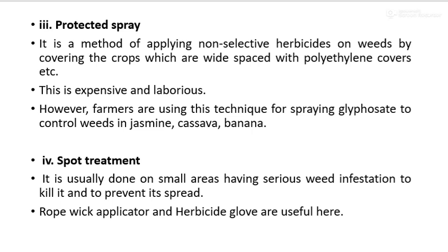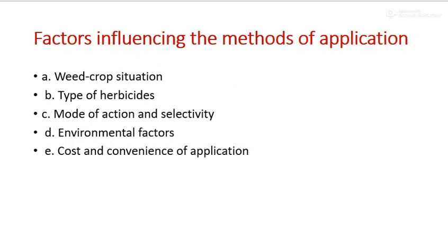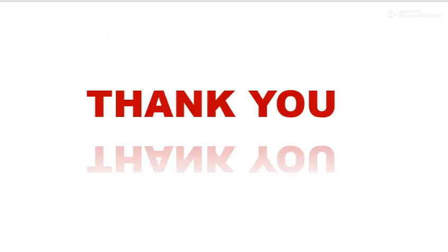These are the methods of application of herbicide. The factors influencing the method of application of herbicide include: crop-weed association, types of herbicide, mode of action and selectivity of herbicide, some environmental factors, and cost and convenience of application. Thank you.